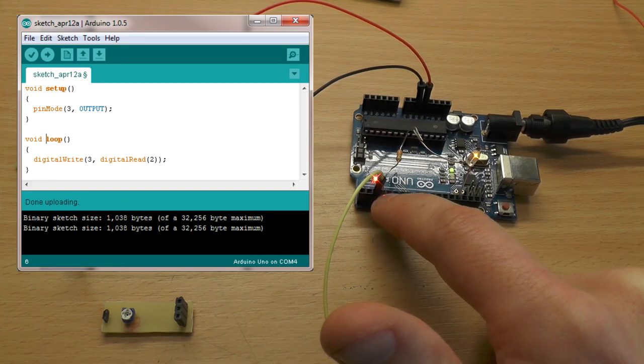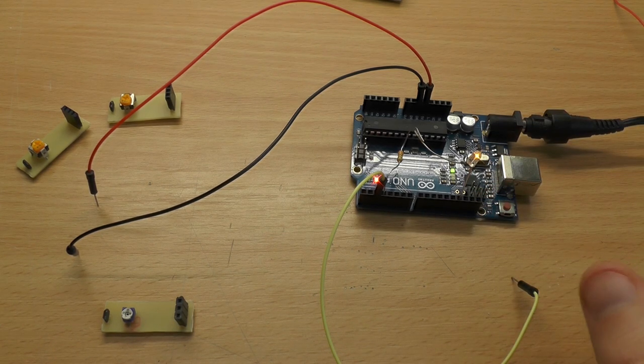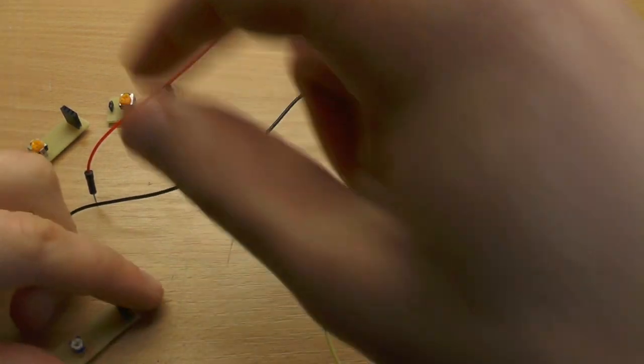So whenever we are sensing high on this line, the LED will light up. So let's just connect our sensor.